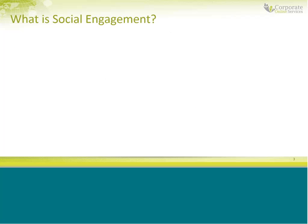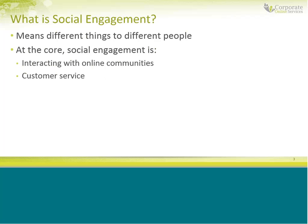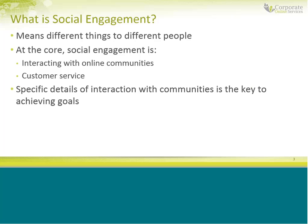Social engagement really means different things to different people. If you ask 10 people, you're probably going to get 10 different answers, even within the same company or team. But at the core, social engagement is about two things: interacting with online communities, and customer service. Your interactions are geared toward helping people and promoting your product and service. A lot of people don't think of social engagement as customer service, but at the core, it really is. The specific details of those interactions — the way you interact, where you interact — are key to achieving your goals.